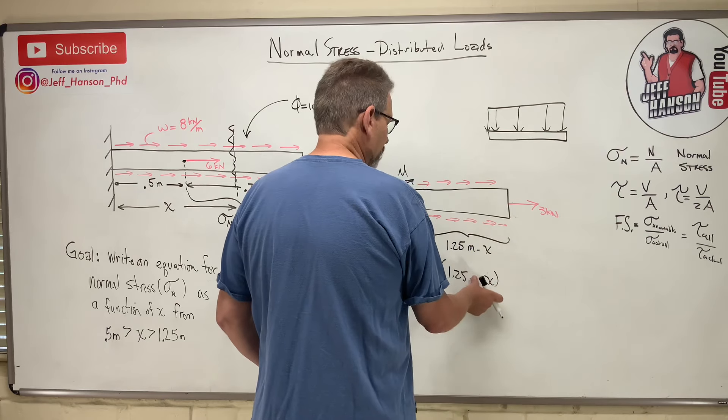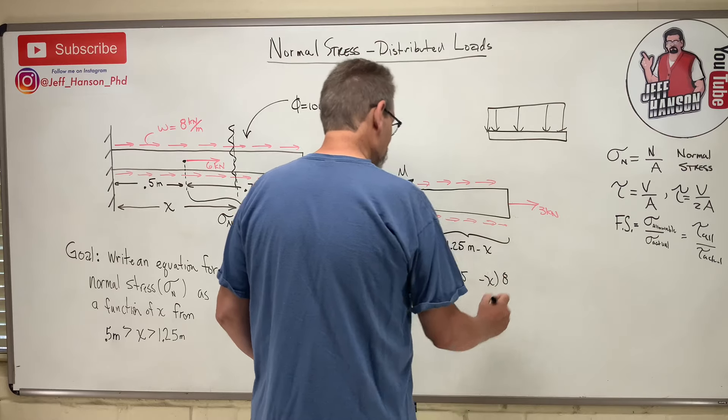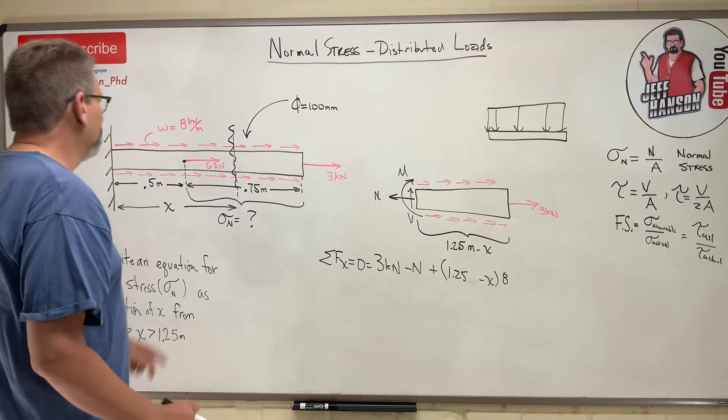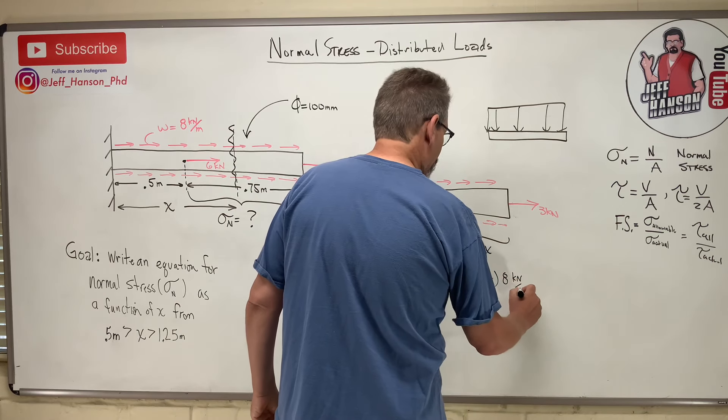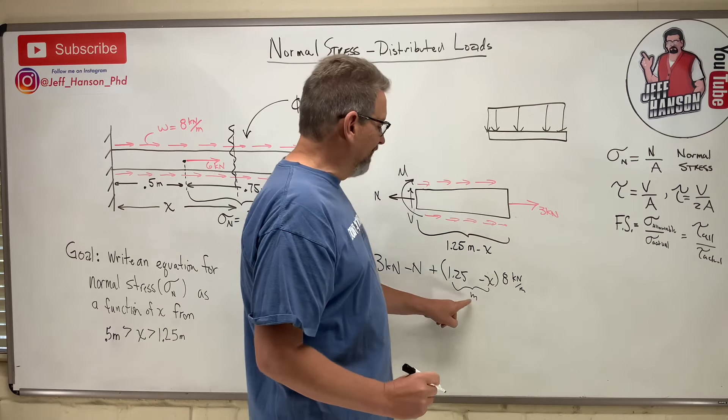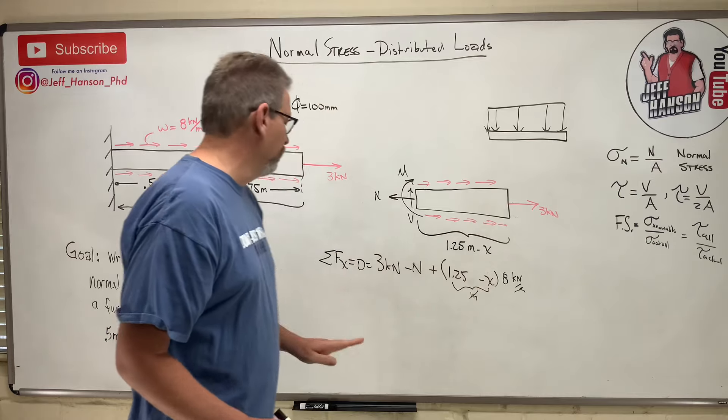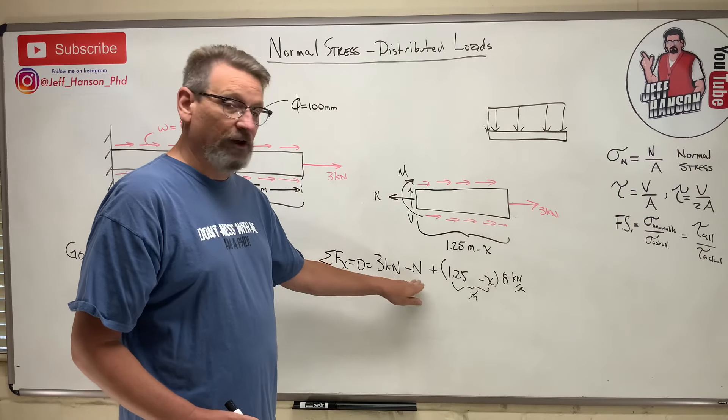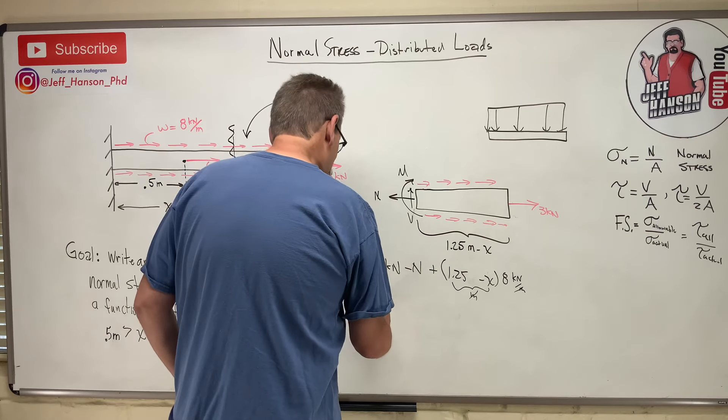We'll just say 1.25 minus x. We know that's meters. Times 8 kilonewtons per meter. So if this whole thing is in meters, and I multiply that times that, then that and that cancel out. So that's in kilonewtons, that's in kilonewtons. So when I solve for n, it's going to be in kilonewtons, right?